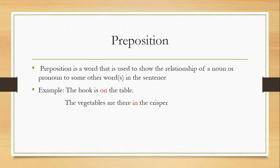Then comes preposition. Preposition is a word that is used to show the relationship of a noun or pronoun to some other word in the sentence. For example, the book is on the table. Here we get to know about the preposition. The vegetables are there in the crisper.